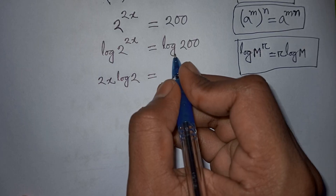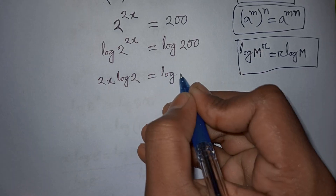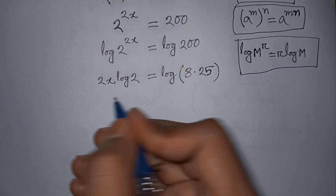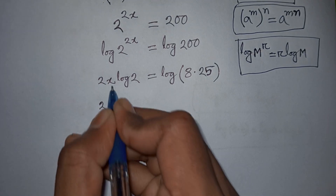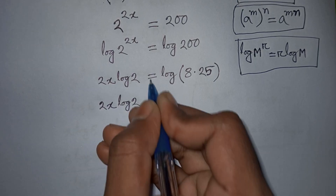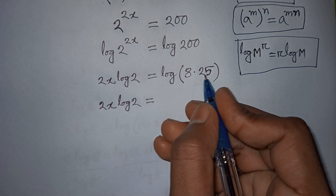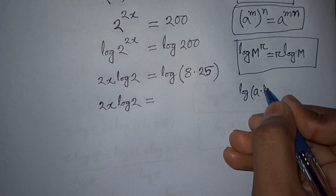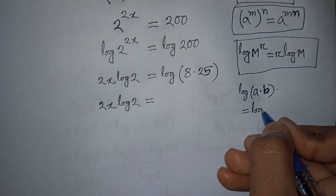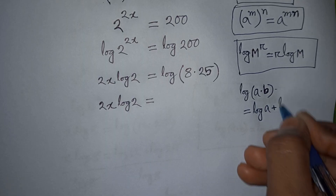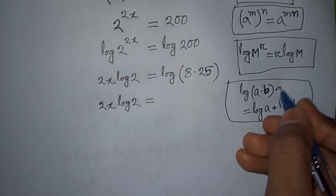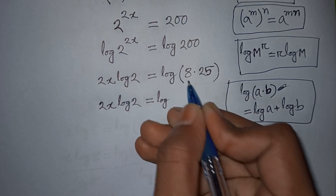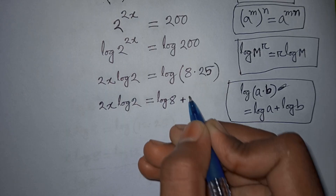So 2x·log 2 is equal to log of 200, which is the same as log of 8 times 25. In the next step we have 2x·log 2 equals log(8 × 25). Here we apply the formula log(a × b) equals log a plus log b, so log(8 × 25) is the same as log 8 plus log 25.